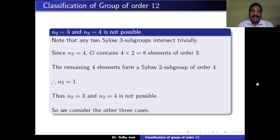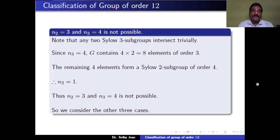The remaining 4 elements, including the identity, must form a Sylow 2-subgroup. Since the Sylow 2-subgroup has order 4, G has a unique Sylow 2-subgroup, so N2 = 1, which contradicts N2 = 3. Therefore, the case N2 = 3 and N3 = 4 is not possible.